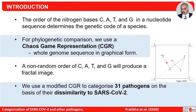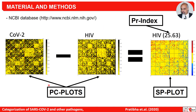This produces a fractal image of the genomic sequences of a pathogen. The locations of the points in the square are called the addresses of a particular order. If the sequence is random we get a scattered plot; otherwise, for a non-random order of C, A, T, and G, it produces a fractal image. The first two plots shown here are the percentage CGR plots of coronavirus and HIV, and the difference between these two is the subtraction plot. The red dots represent extra addresses occupied by coronavirus and the blue dots represent extra addresses occupied by HIV.